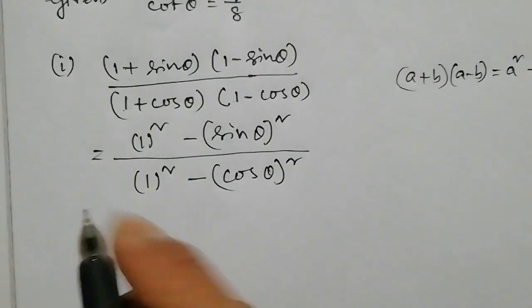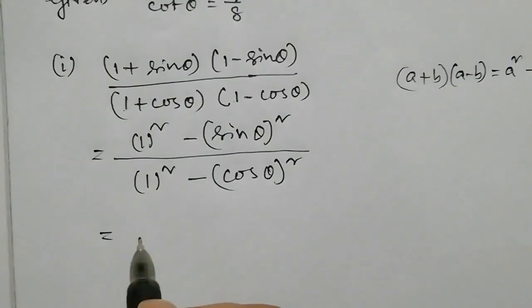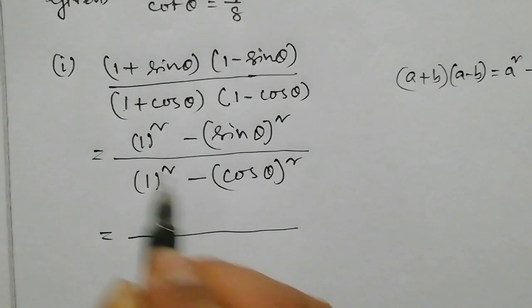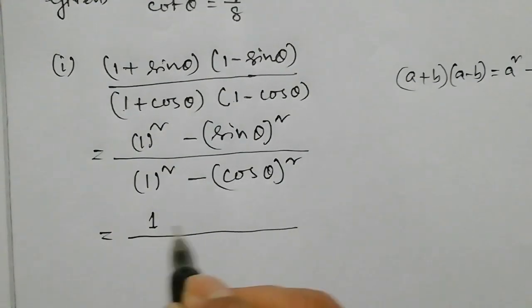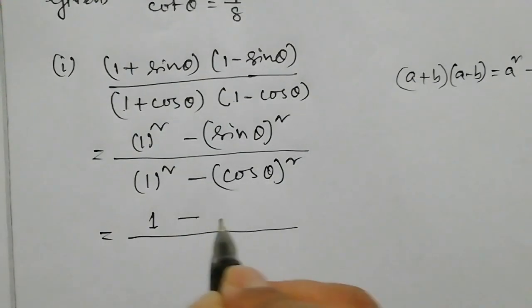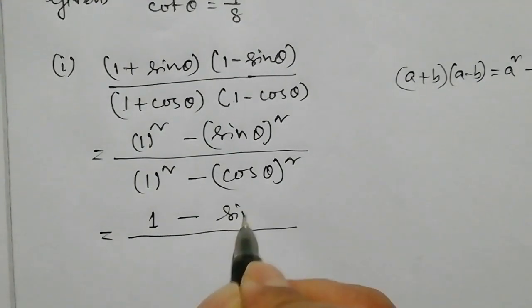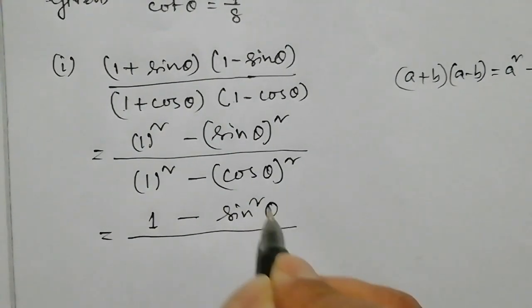So this simplifies to: 1 square minus cos theta square, divided by 1 minus sin square theta.